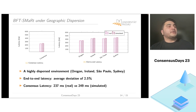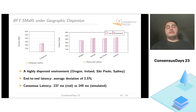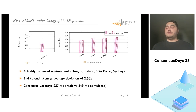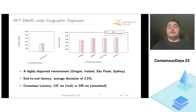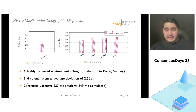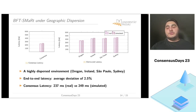Next, we conducted a simulation of BFT-Smart in a highly dispersed environment. Replicas operate in Oregon, Ireland, São Paulo, and Sydney, with a client in each region used to measure end-to-end latency. The simulated latency is somewhat higher than real-world settings, but not dramatically so. For end-to-end latency we have an average deviation of 2.5%, and for consensus latency a difference of a mere 12 milliseconds.